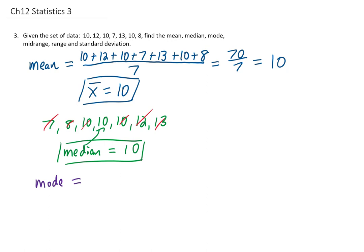Our mode is always our most frequently occurring data value, and since 10 appears in this data set three times, our mode is going to be 10 as well.